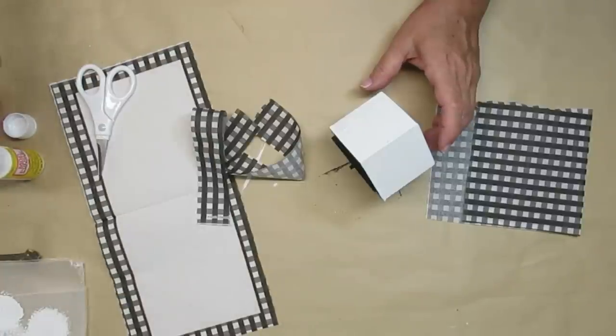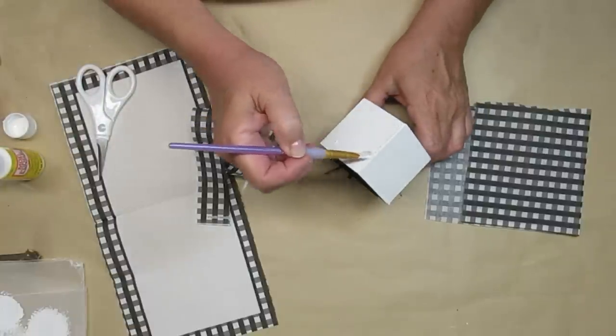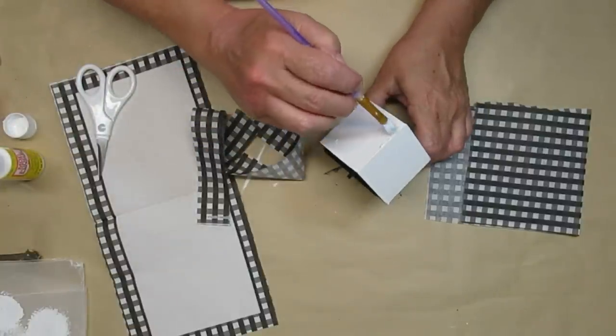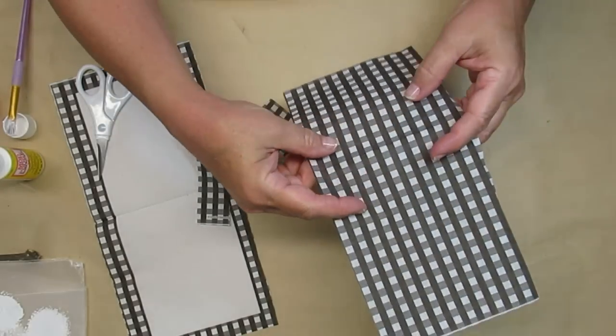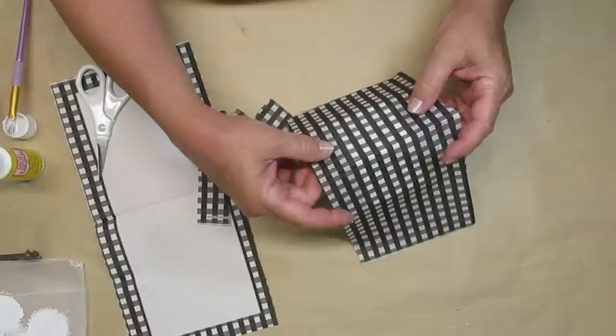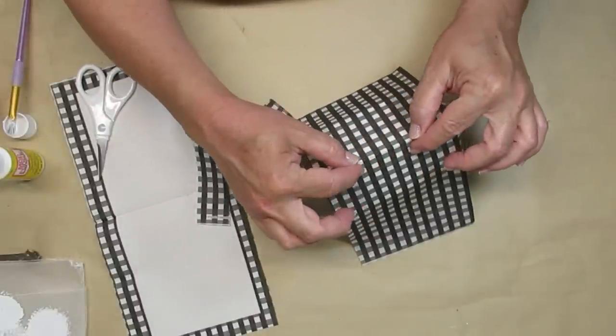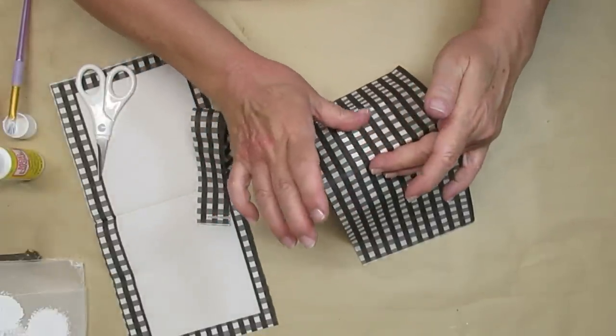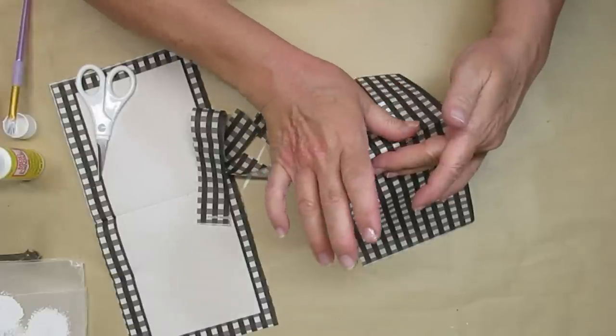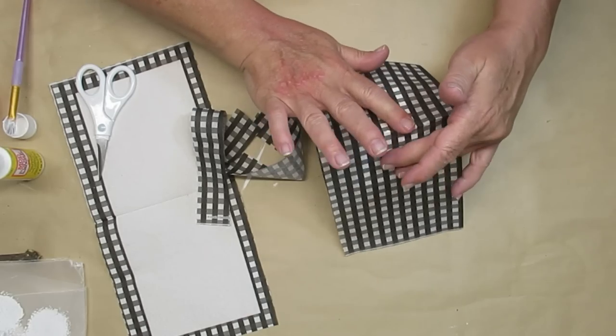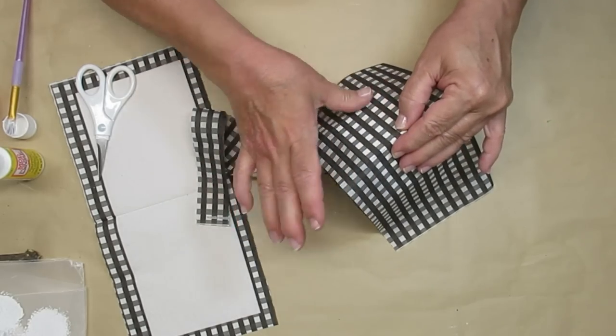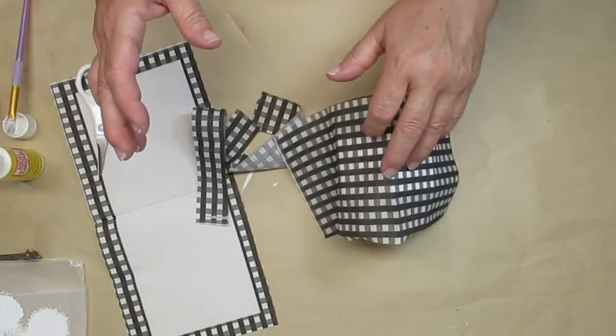Using Mod Podge I'm going to glue the napkin onto the roof of the house. The napkin has a nice crease in it from where the fold is and that's what I'm going to place on the very peak of the roof and that's going to help me make it nice and smooth. I'm not going to be putting any Mod Podge on the top of the napkin because a little bit came through. It's a little damp and that's going to be enough to hold the napkin in place.